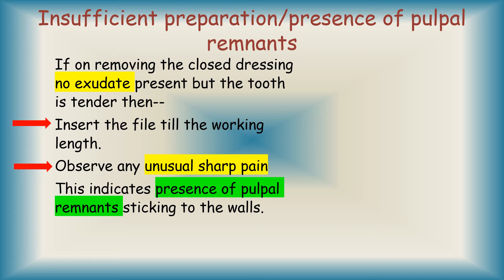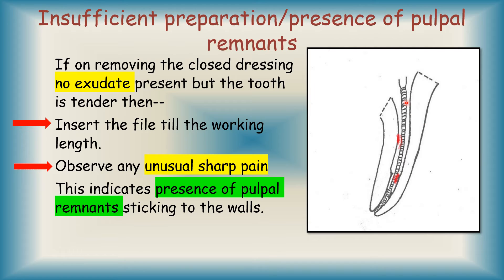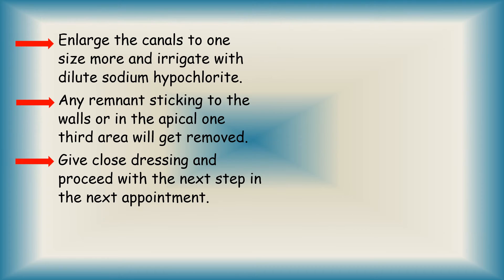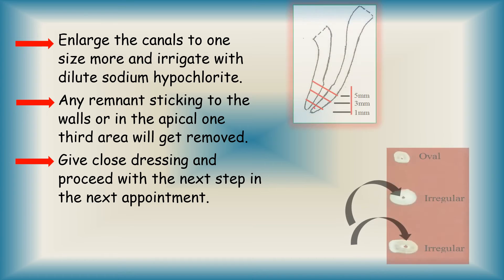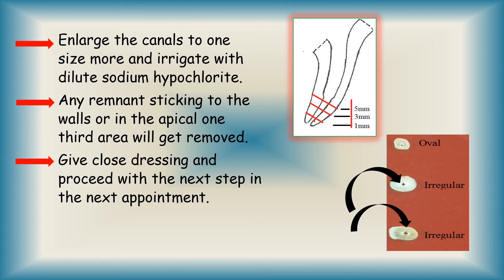If on removing the closed dressing there is no exudate present but the tooth is still tender, take a file and insert it till the working length and observe for any unusual sharp pain. This pain may be present in the apical third area or anywhere along the length, and it would indicate the presence of pulpal remnants still sticking to the walls. So we enlarge the canals by one size more and irrigate with dilute sodium hypochlorite. Any remnants sticking to the walls or in the apical one-third area get removed. After this, we give a closed dressing and proceed with the next step in the next appointment in case the patient is comfortable.